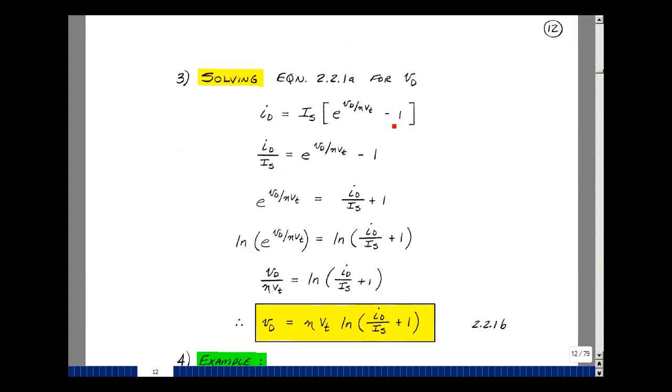The Shockley equation we had on the last page was solving for I_d in terms of V_d. Suppose you knew what I_d is, could you solve for V_d? I'll just solve this equation for V_d. Divide by I_s, bring this on the other side of the equation, so we have I_d over I_s plus 1 is equal to e to the V_d over eta V_t.